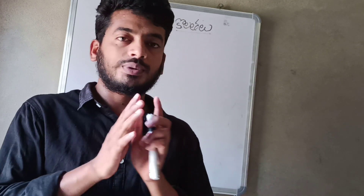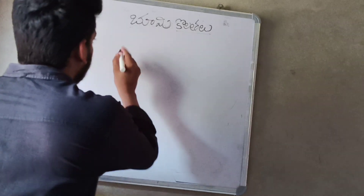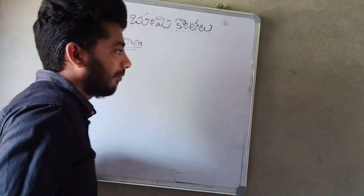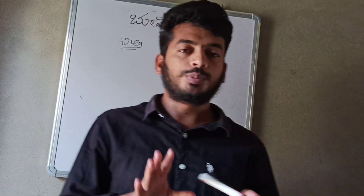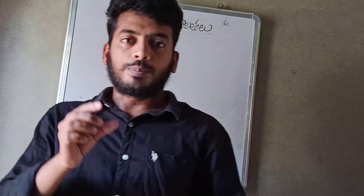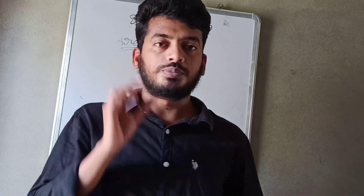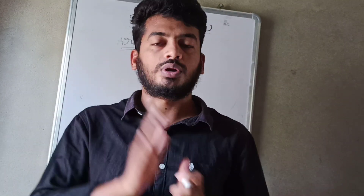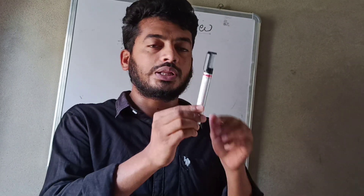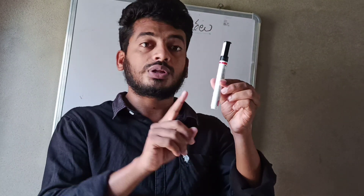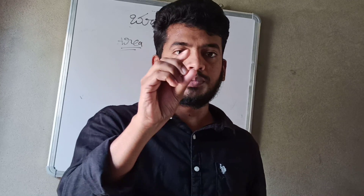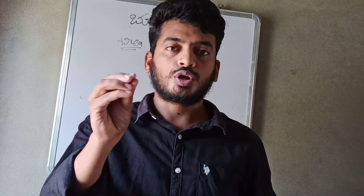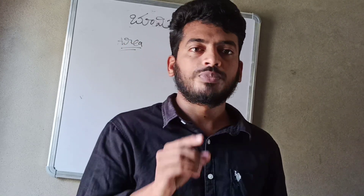First, let me explain the area. Area means the place occupied by a 2D object. A 2D object has length and breadth. In general, a 3D object has height and breadth, but this is only a 2D object. The place occupied by a 2D object is called area.